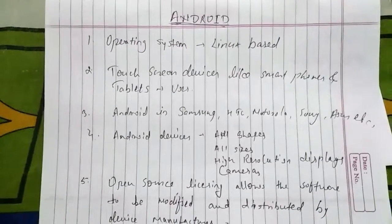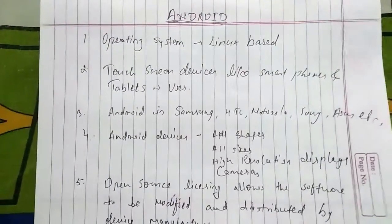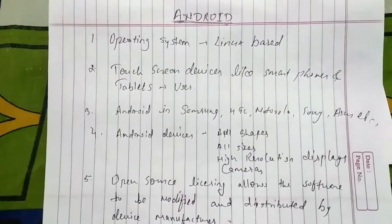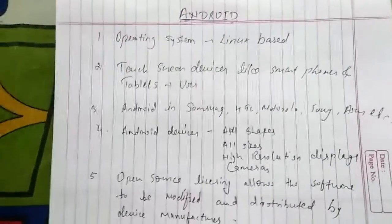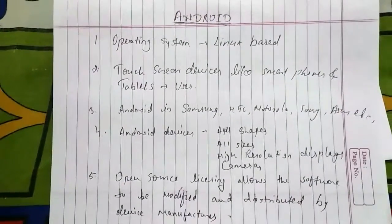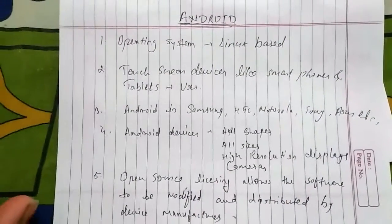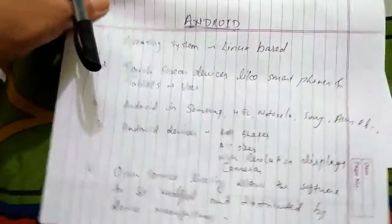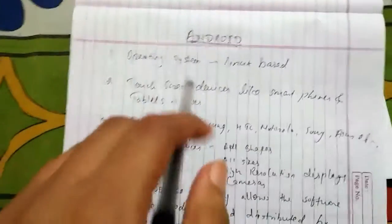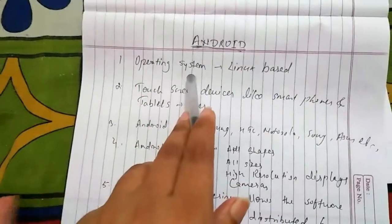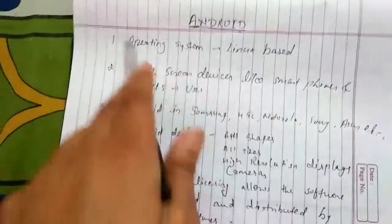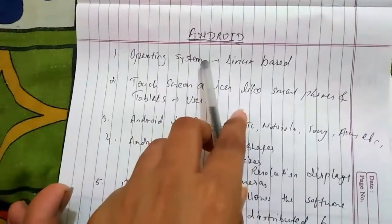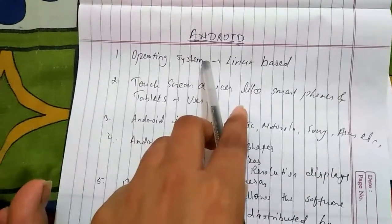Hello guys, this is Preeti and today's topic is Android. So let's see what Android is. The first point states that Android is an operating system, and this operating system is Linux-based. It is a system software for smartphones.